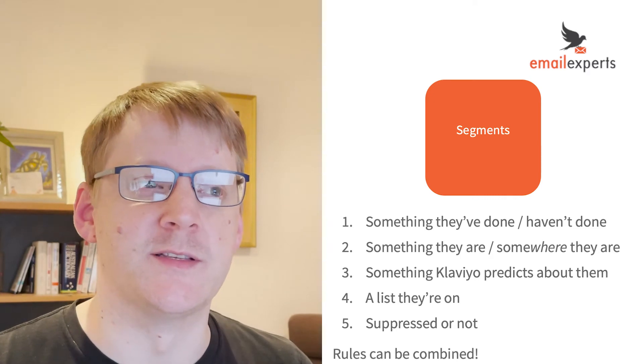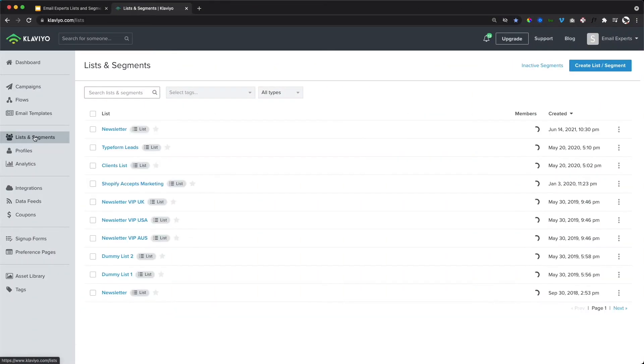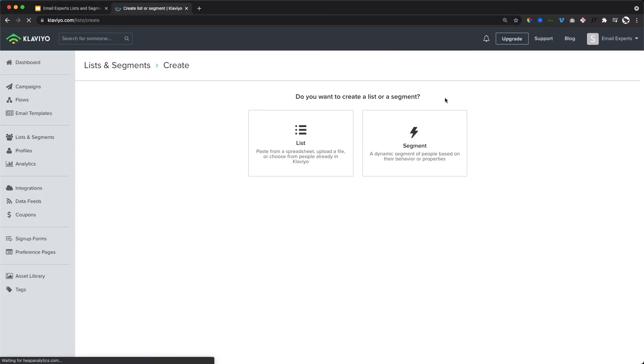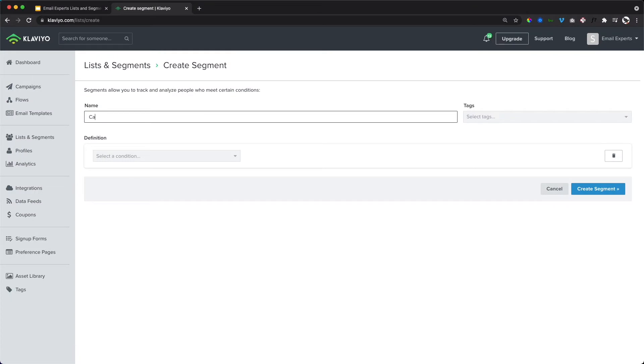So let's jump into an actual demo of how to make a segment within Klaviyo. So within Klaviyo, go to lists and segments. And again, just go to create list or segment. Click on segment and imagine, for example, that you're a Californian brand and you want to win back disengaged customers with a discount. So you can combine the different rules as I said. So let's say we want Californian women who haven't bought recently.